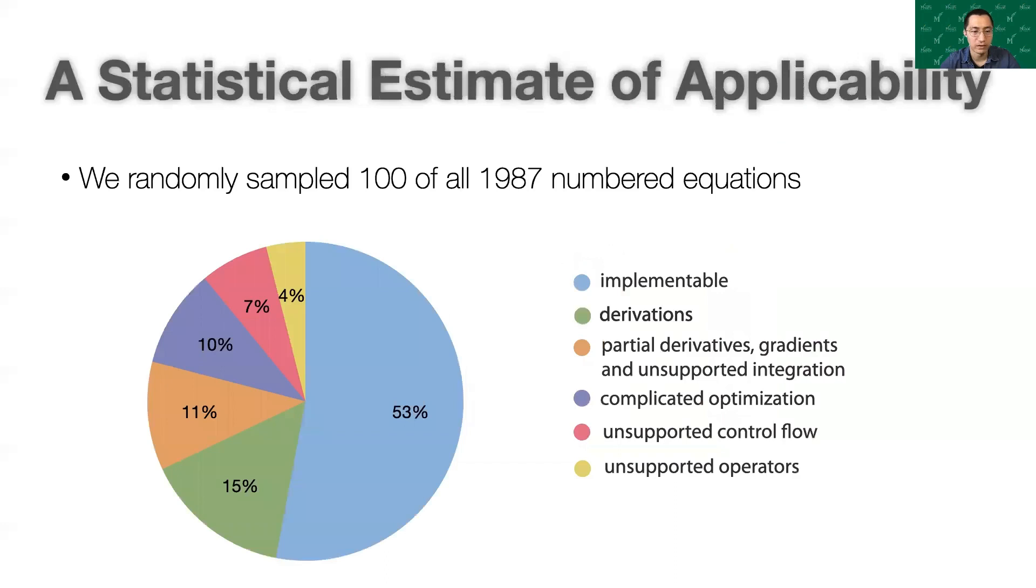To estimate the applicability of I❤LA to computer graphics in general, we randomly sampled 100 of all 1,987 numbered equations to avoid bias and cherry-picking. This is a fresh philosophy for programming language design. Among the 100 equations, we determined 53 are directly implementable using I❤LA.